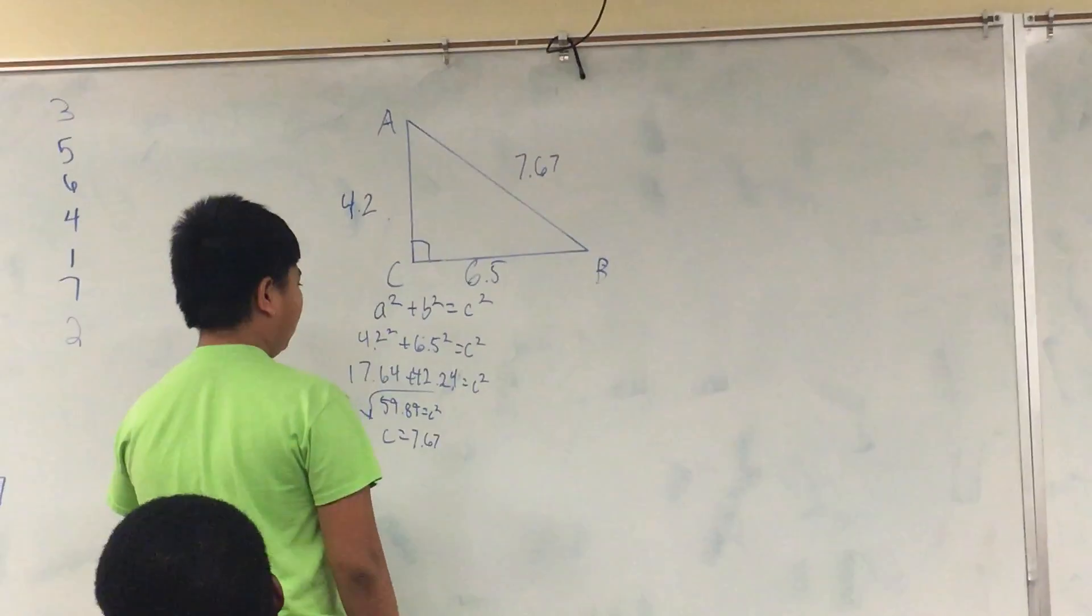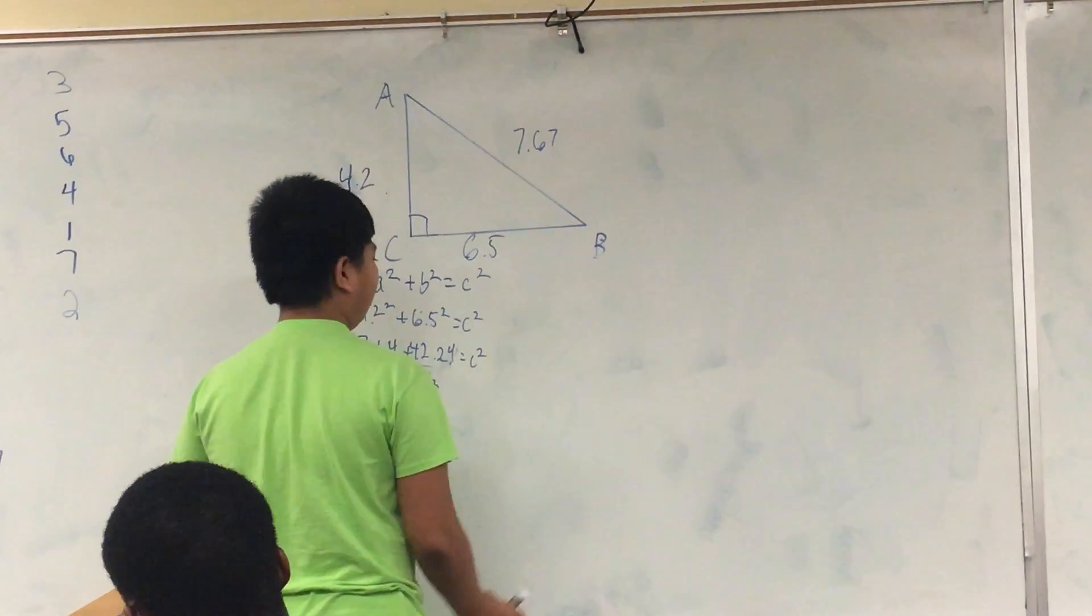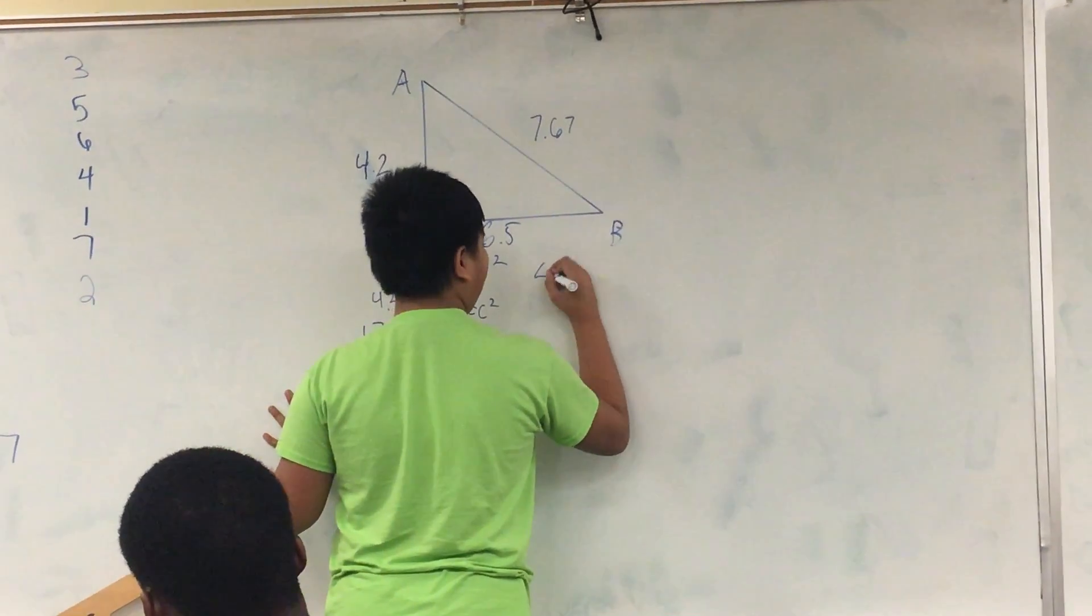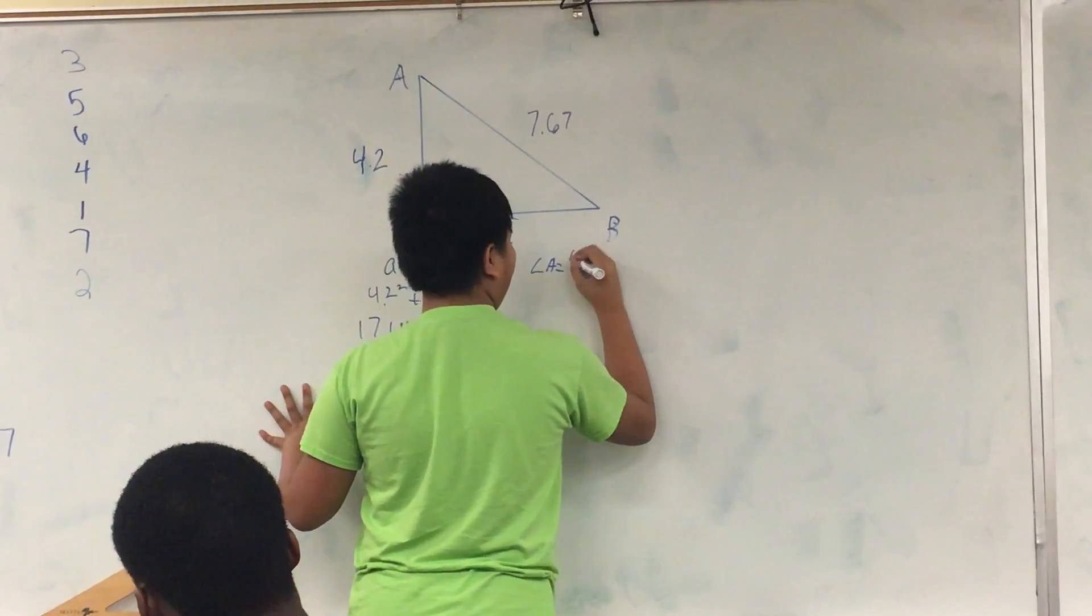Step 2. Find angle A. Use tangent. Tangent equals 6.5 over 4.2.